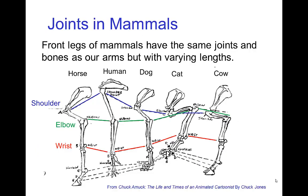The joints in mammals tend to be rather similar. Here we see the bone structure for horse, human, dog, cat, and cow — this is for the front leg, or the arm for the human. We have a shoulder joint, elbow joint, and similar wrist joint, but what you should keep in mind is that the different bones are significantly different lengths.